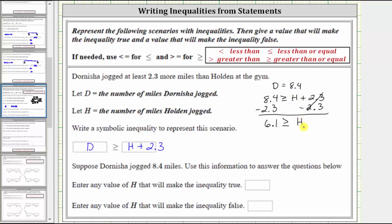Let's write the equivalent inequality using the less than or equal to symbol. We reverse the order and write this as H is less than or equal to 6.1. Notice for both inequalities, the inequality points toward the H and is open toward the 6.1. Let's use this inequality to answer the last two questions.